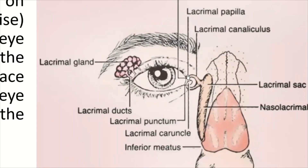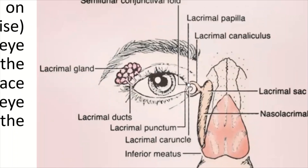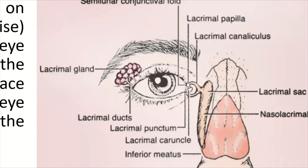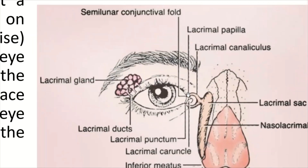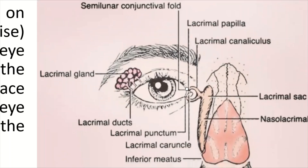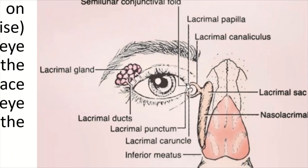Here you can see the lacrimal papilla — it is a rise on the medial side of the eye. The lacrimal punctum is a small hole in the middle of the lacrimal papilla.